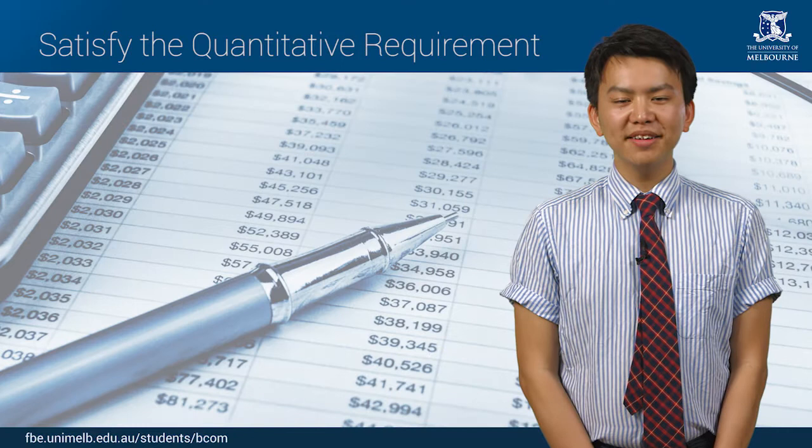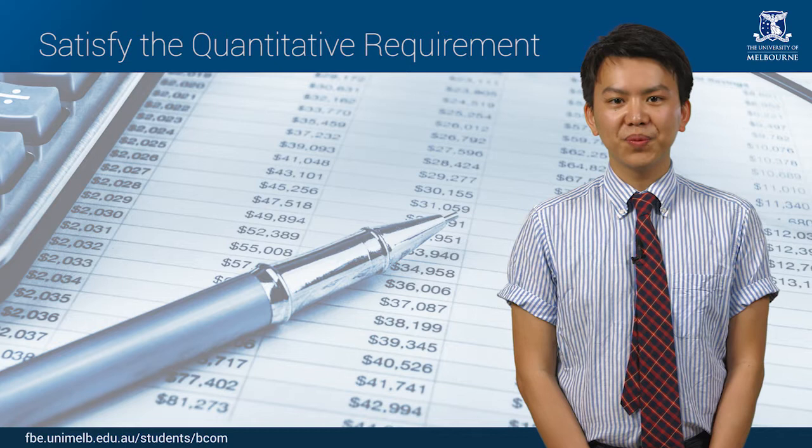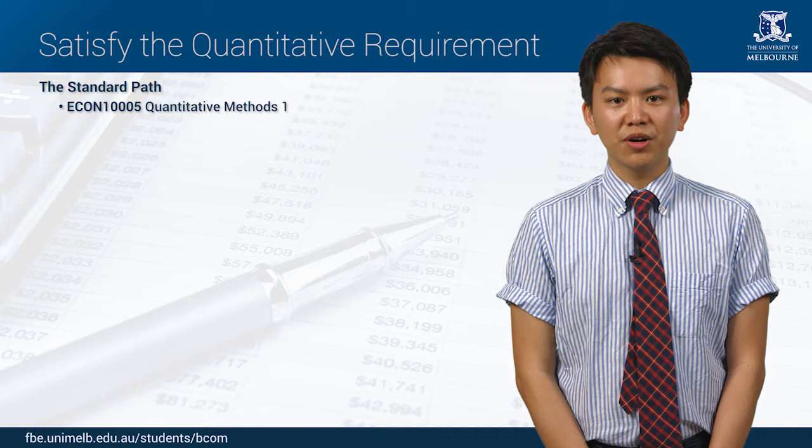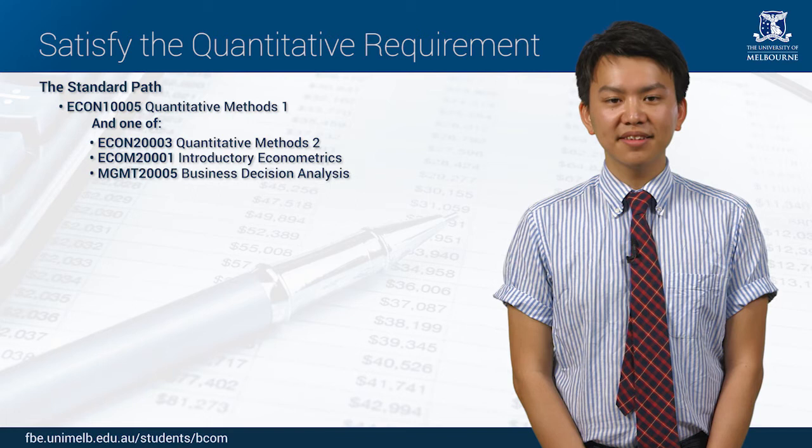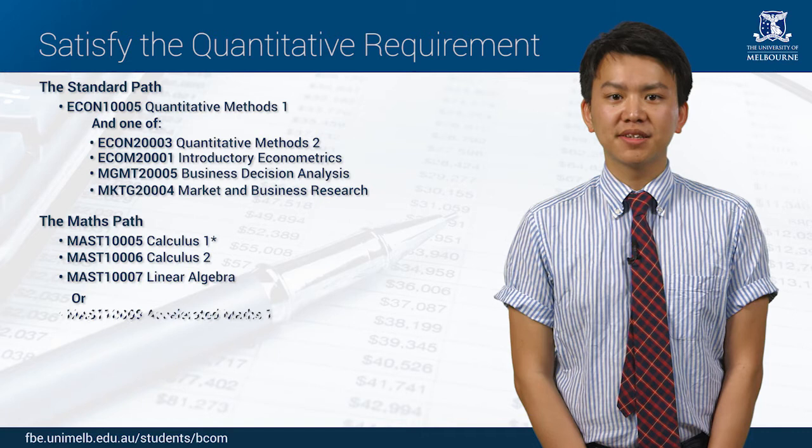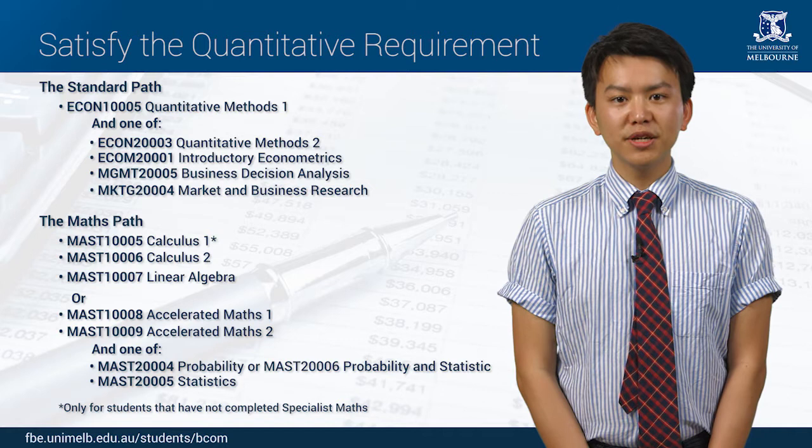There are two ways that you can meet the BCom's quantitative requirement: the standard path and the maths path. If you take the standard path you will need to complete quantitative methods one at level one, and then one of quantitative methods two, introductory econometrics, business decision analysis, or market and business research at level two. If you are passionate about maths you can complete a series of maths subjects to meet the quantitative requirement. Which subjects you will need to study at level one will depend on what maths you have completed at high school.